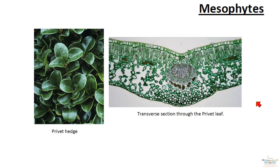This is the third and final video on plant adaptations. The last one is mesophytes. These plants have a variety of adaptations depending on the type of plant. You should know about the privet hedge — that's a typical mesophyte. The leaf structure is something you've seen before; it's a typical leaf structure we've looked at previously, so there are no special adaptations to speak of there.